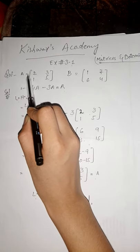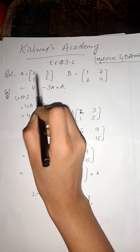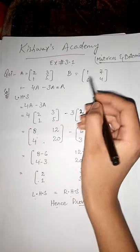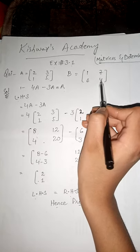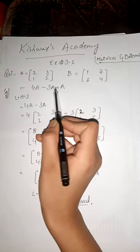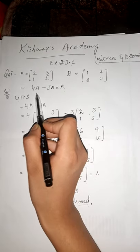A is equal to [2, 3, 1, 5], B is equal to [1, 6, 7, 4]. Question number 1 is 4A - 3A = A. We have left hand side.